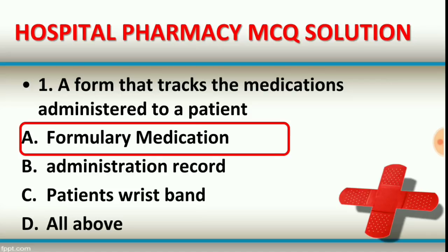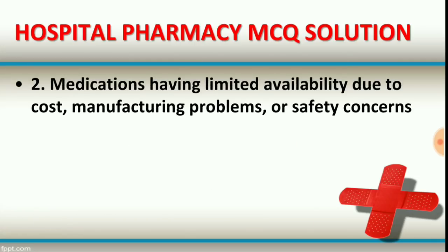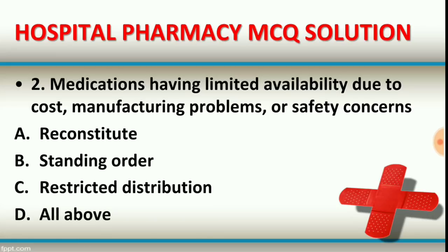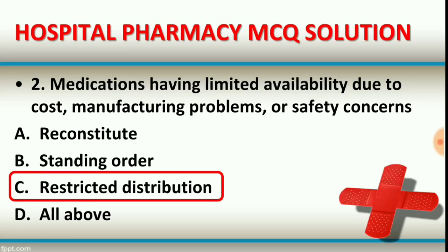Question number two: medications having limited availability due to cost, manufacturing problems, or safety concerns. Option A: reconstitute. Option B: standing order. Option C: restricted distribution. Option D: all of the above. The right answer is option C, restricted distribution. Medications having limited availability due to cost, manufacturing problems, or safety concerns are called restricted distribution.